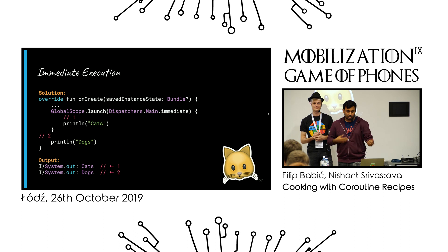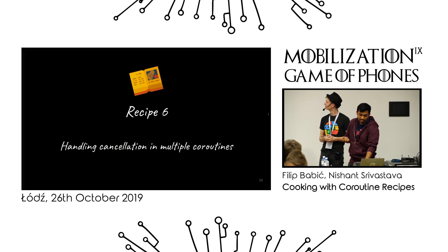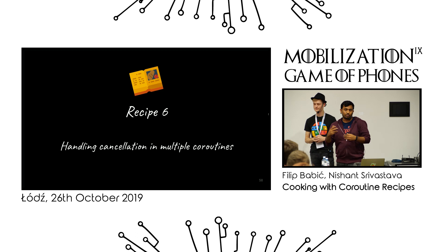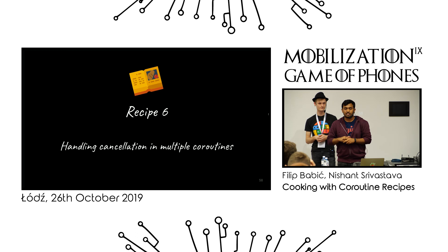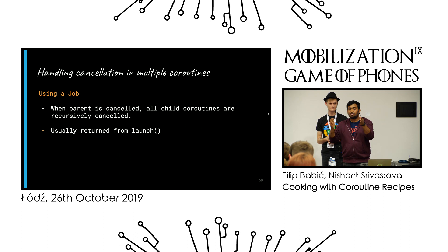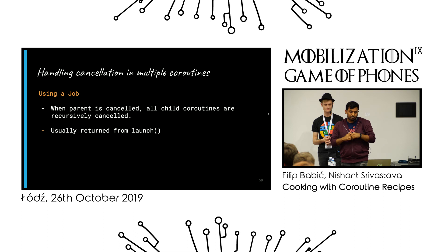When you have coroutines running and your activity goes into onDestroy, a running coroutine that tries to come back and has an await will crash the app. Most people either cancel coroutines randomly, or if they don't have the reference they can't cancel at all. The usual way to handle cancellation is to use a Job. When you use launch, it returns a reference to a Job. Inside that job, if you have multiple coroutines running, that job becomes the parent — cancelling the parent will cancel all children.